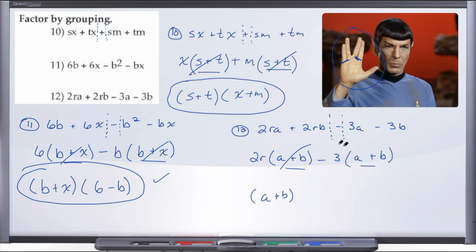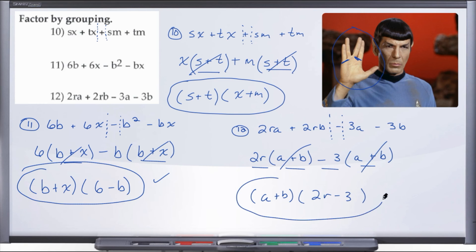We bring that matching set of parentheses down, cross them out, and what are we left with? 2R minus 3. And there you have it — the factored form for number 12 is (A plus B)(2R minus 3).